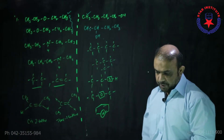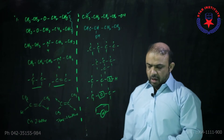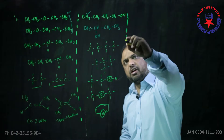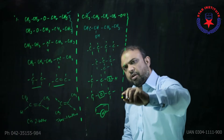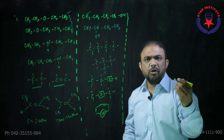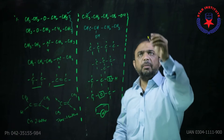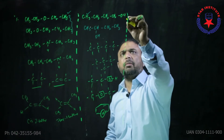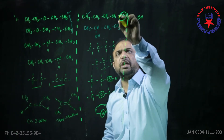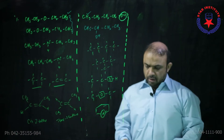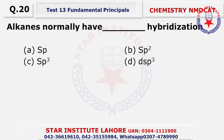Question number nineteen: The most active part of a molecule is said to be its functional group. The most reactive part of any molecule will be called its functional group. For example, if I write the molecule of an alcohol, the OH group is the most active part — that is why it is the functional group.